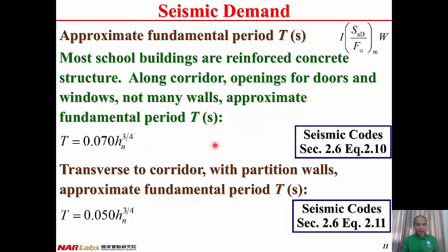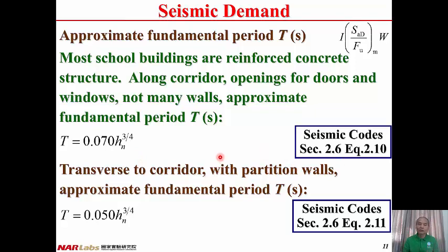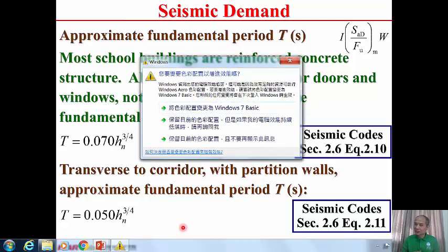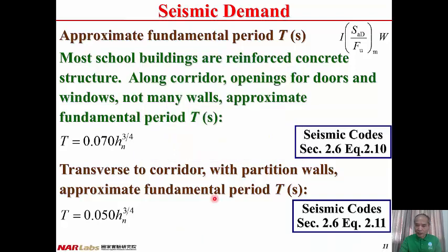For school buildings: along the corridor there are openings for doors and windows and not many walls, so the fundamental vibration period is approximated using the RC structure formula without lateral force-resisting members — T = 0.07 × HN^(3/4) per equation 2-10. Transverse to the corridor there are partition walls, so the fundamental vibration period is approximated using the formula for structures with lateral force-resisting members — T = 0.05 × HN^(3/4) per equation 2-11.